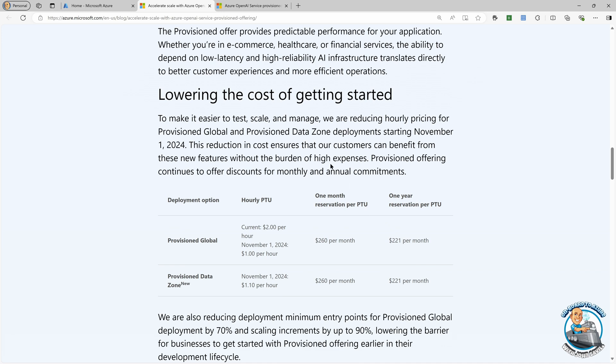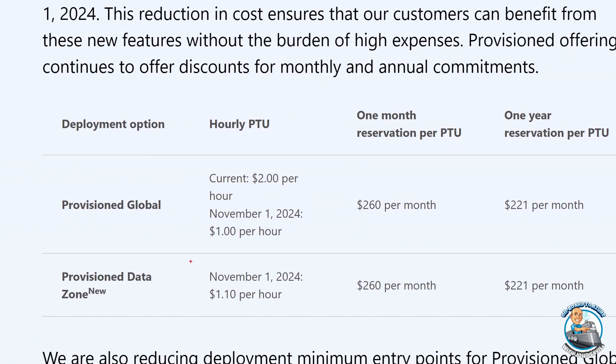They're also lowering the cost of getting started. So when we think about those provision throughput units, remember provision throughput units are about getting a guaranteed amount of throughput you need and also a predictable latency. They are reducing the costs for that per hour cost. So provision global is going to $1 an hour from $2 and provision data zone is $1.10. The reservation for month and year remains unchanged.